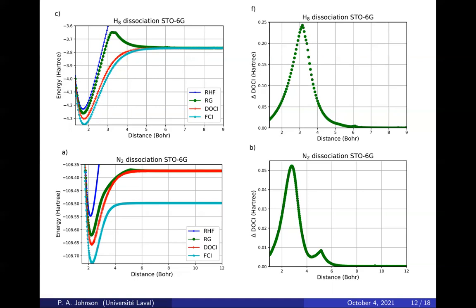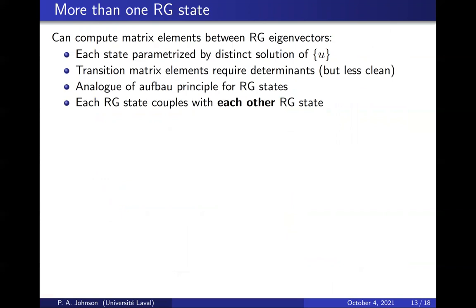So we will need more than one RG state. What does that mean? That means we will have to solve the set of nonlinear equations for all the different states. We need to compute the transition matrix elements between each state. The result is easy. You get determinants of matrices that differ by small numbers of columns. But it's less clean than it was for the diagonal case.